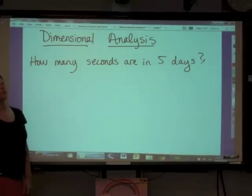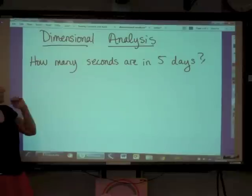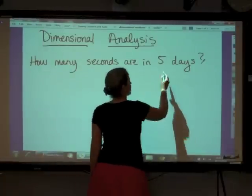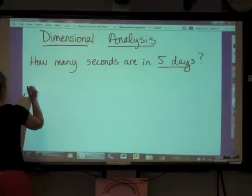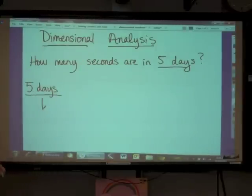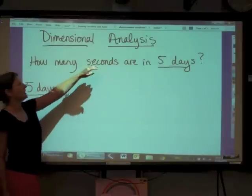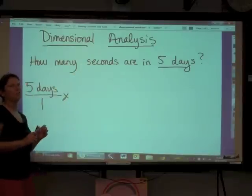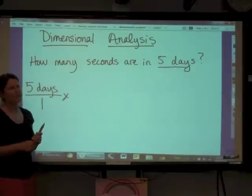When we are setting up a dimensional analysis problem, we are going to begin with our given. So our given in this case is the five days. I'm going to say five days and put that over one. Now I need to eventually get to seconds. That needs to be the unit that is in my numerator at the end of this problem, and if this unit is in my numerator at the end of the problem and all the rest of my units cancel, then I know I have set up the problem correctly.